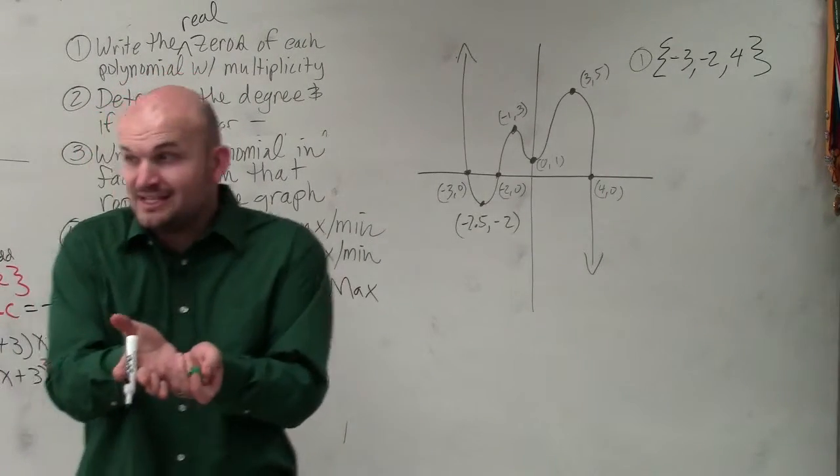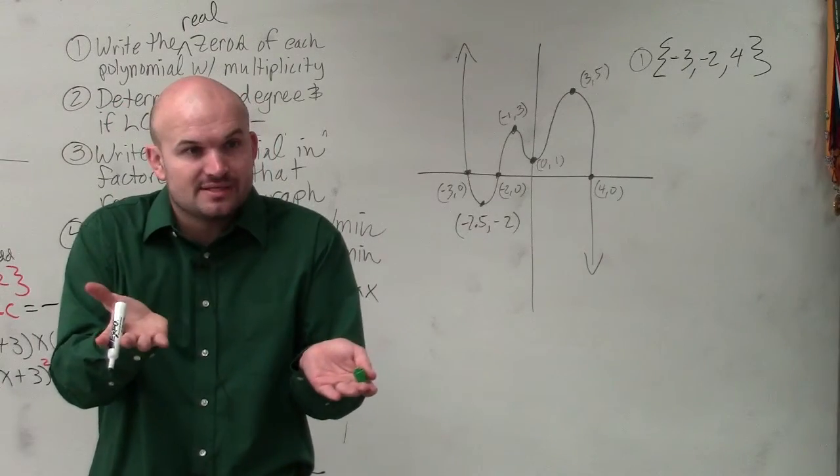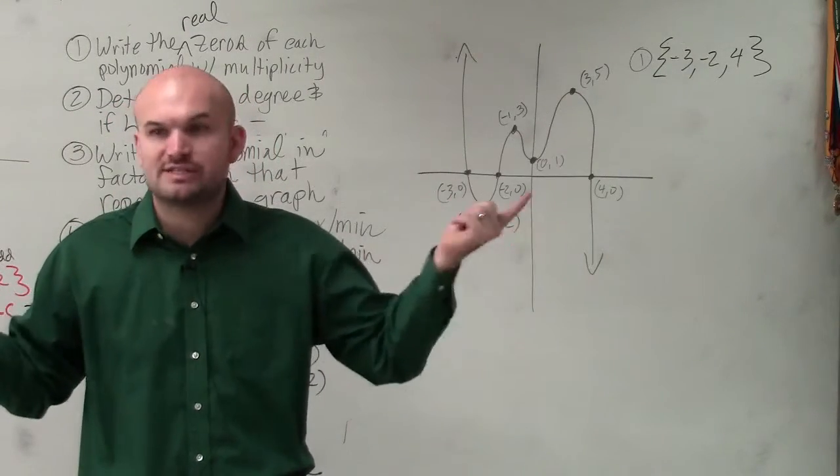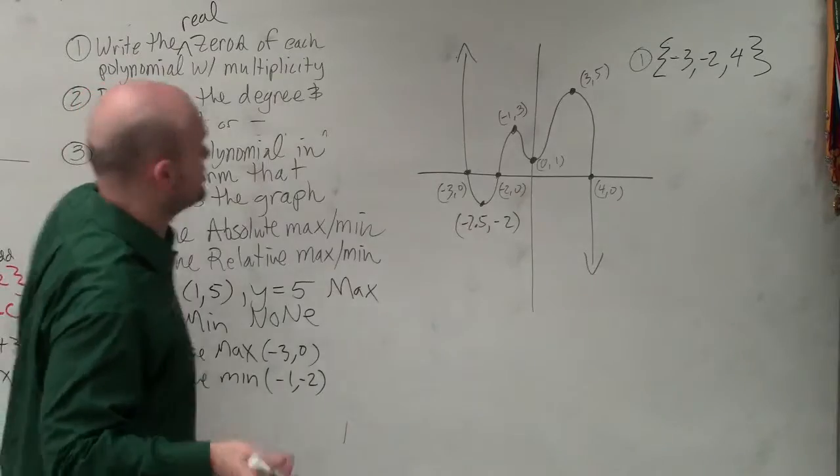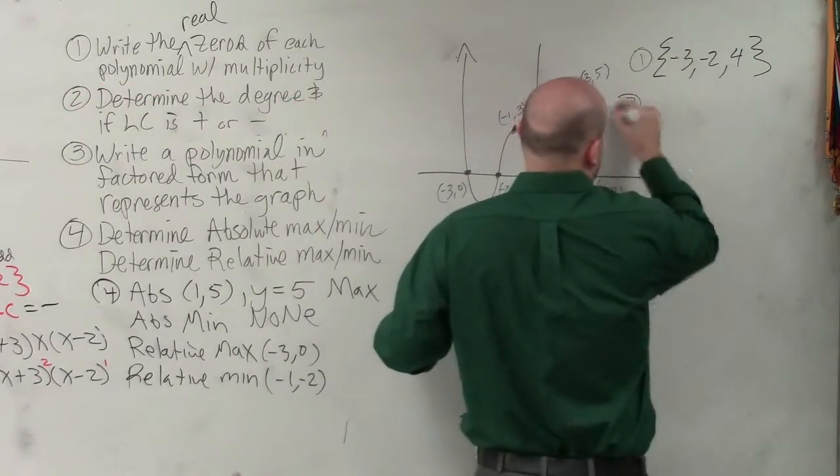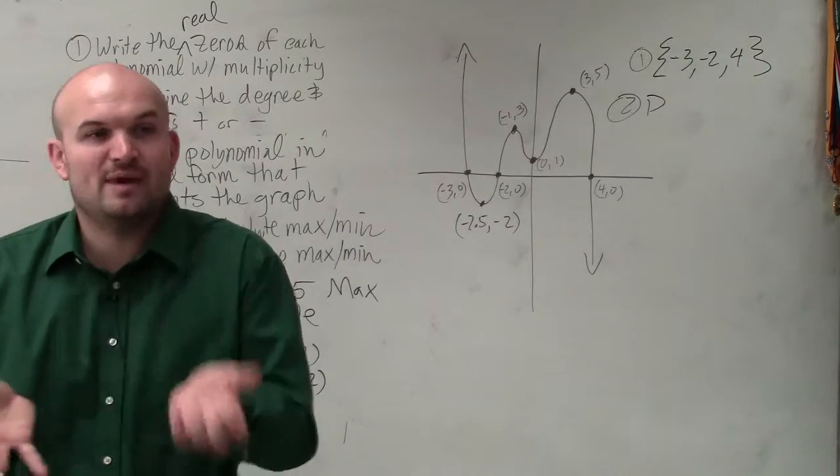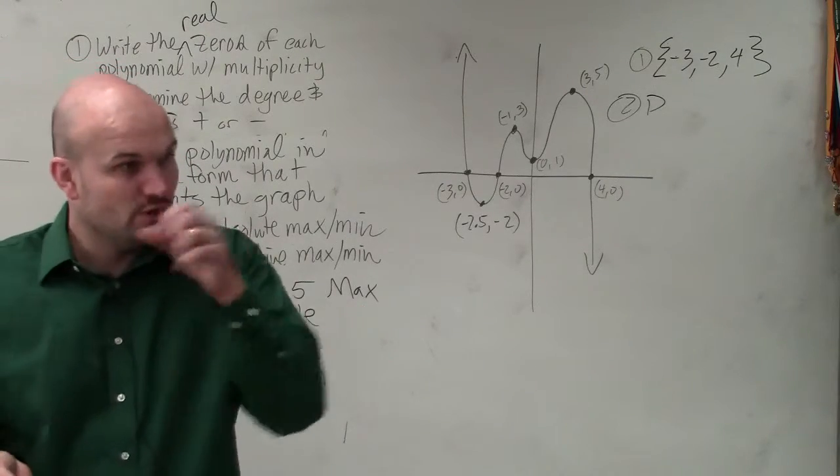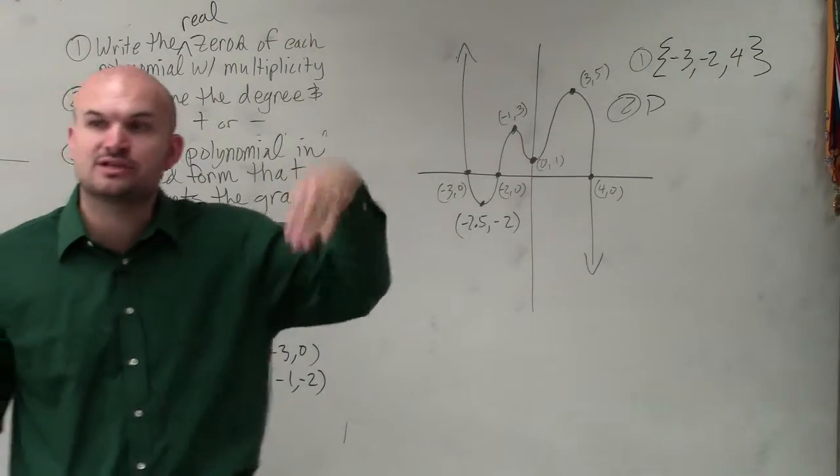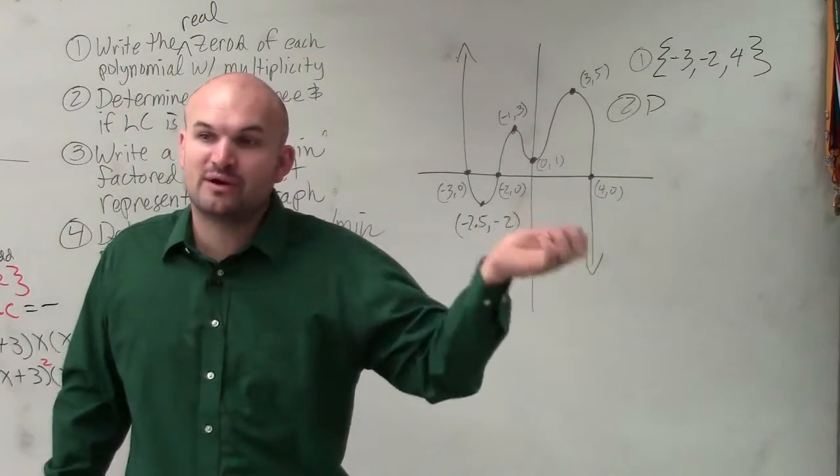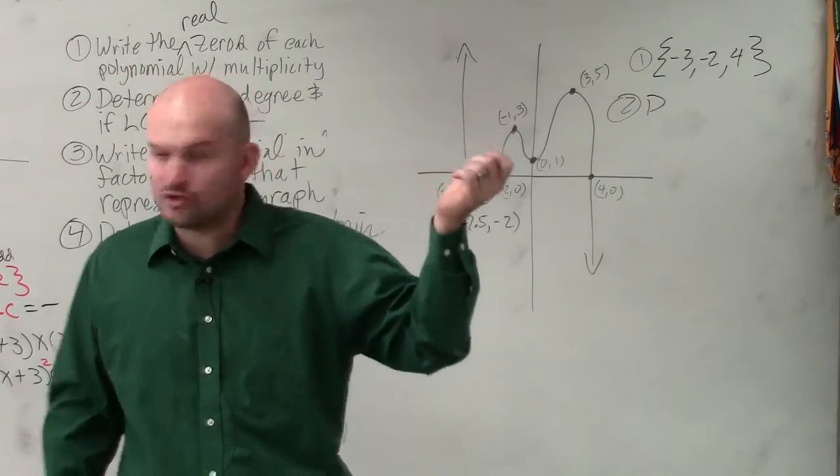Now remember, the degree is the same as the number of real zeros, right? So you could say the degree is 3, because that's the next question, determine the degree. However, we know there's another way to double check that, and the way is to count the number of turning points where the graph goes from increasing to decreasing or decreasing to increasing. The number of turning points plus 1 is the degree.